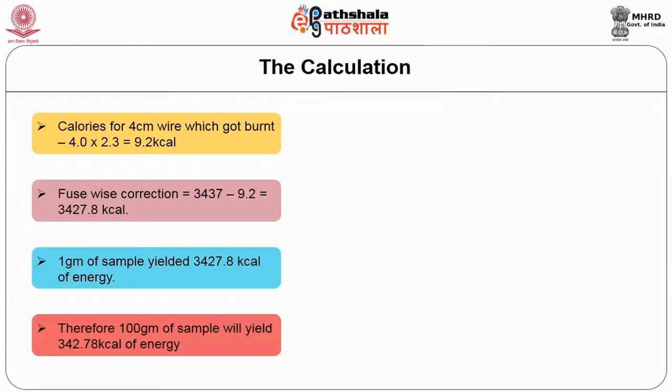The fuse wire correction: 3437 minus 9.2 = 3427.8 kilocalories. That is, 1 gram of sample yielded 3427.8 kilocalories of energy. Therefore, 100 grams of sample will yield 342.78 kilocalories of energy. By this time, you will be able to know the forms, units of energy, and determination of energy value of food.